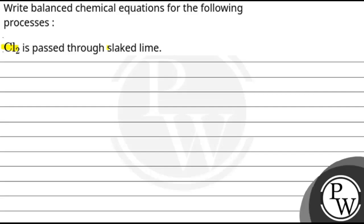Cl2 is passed through slaked lime. So, because of the slaked lime, it is going to be calcium hydroxide.